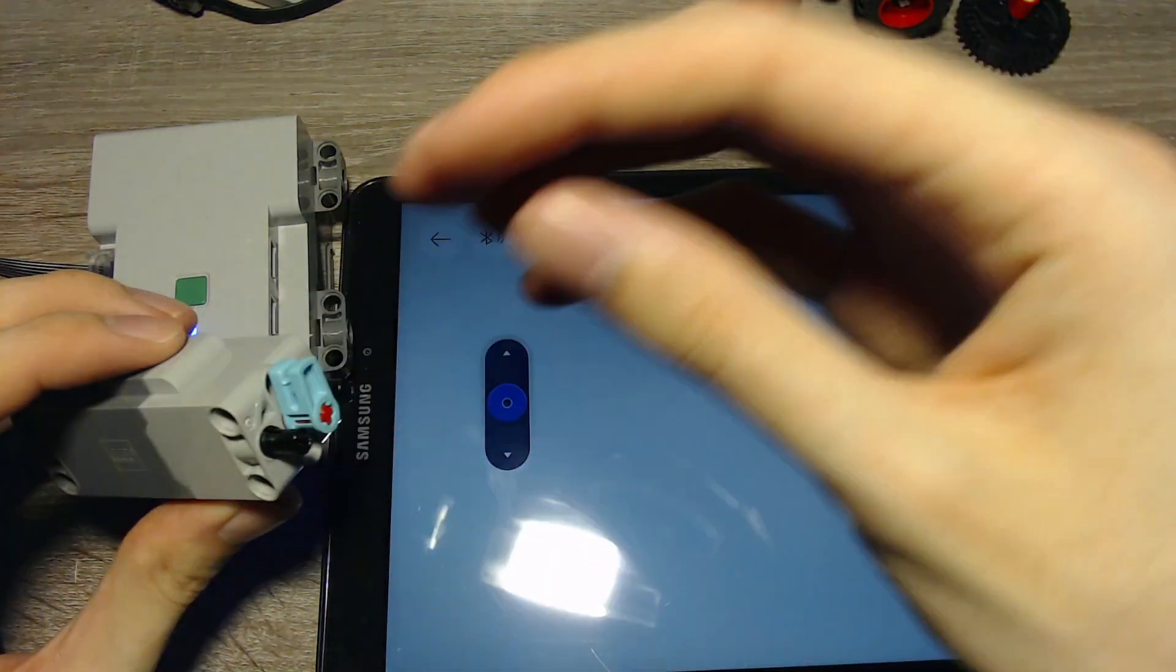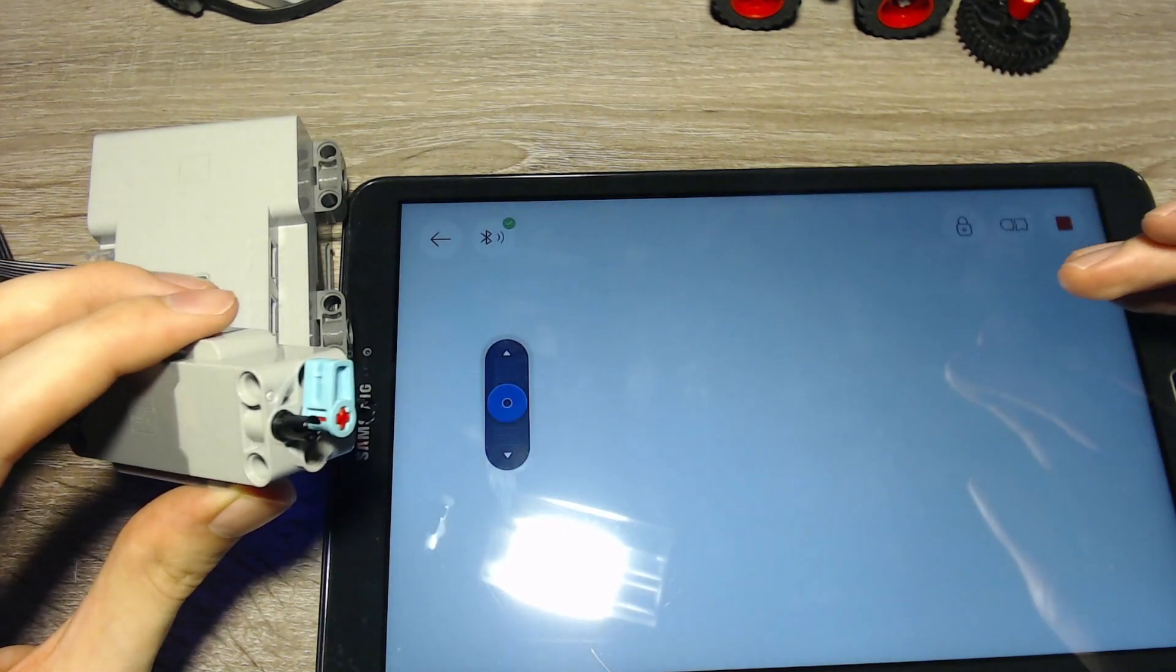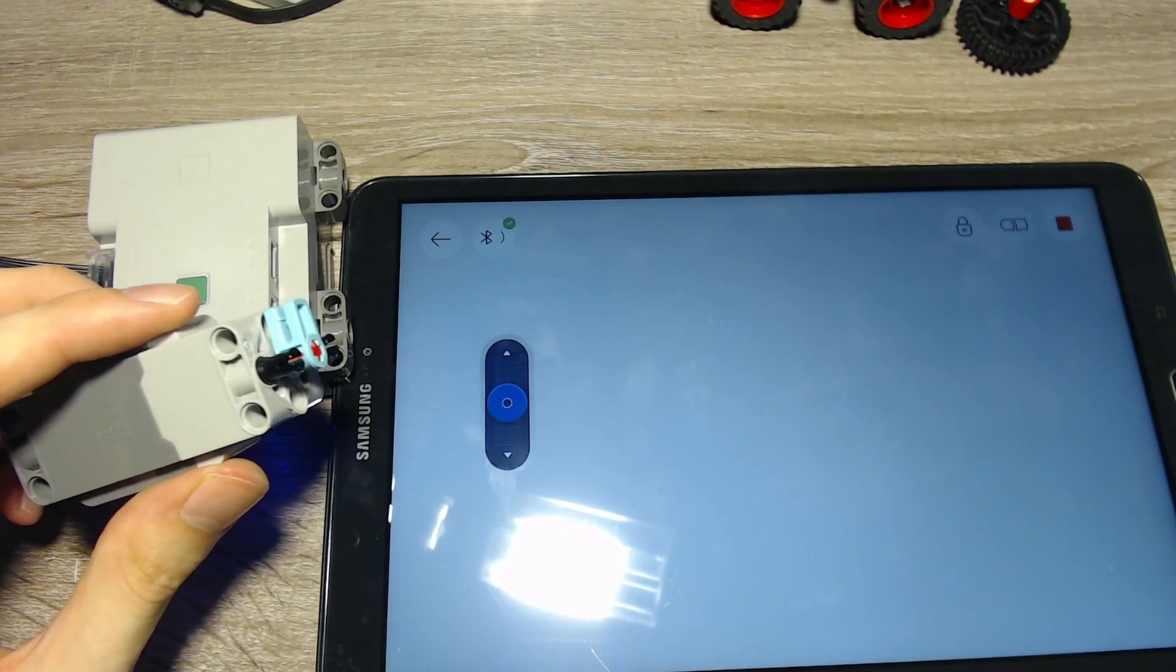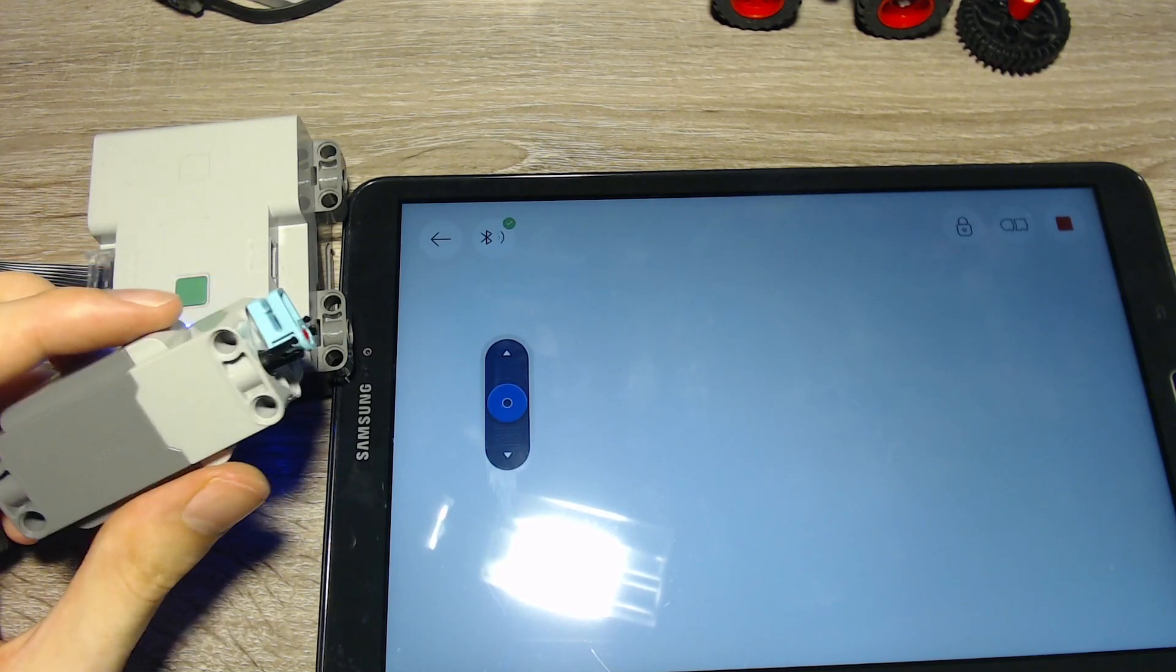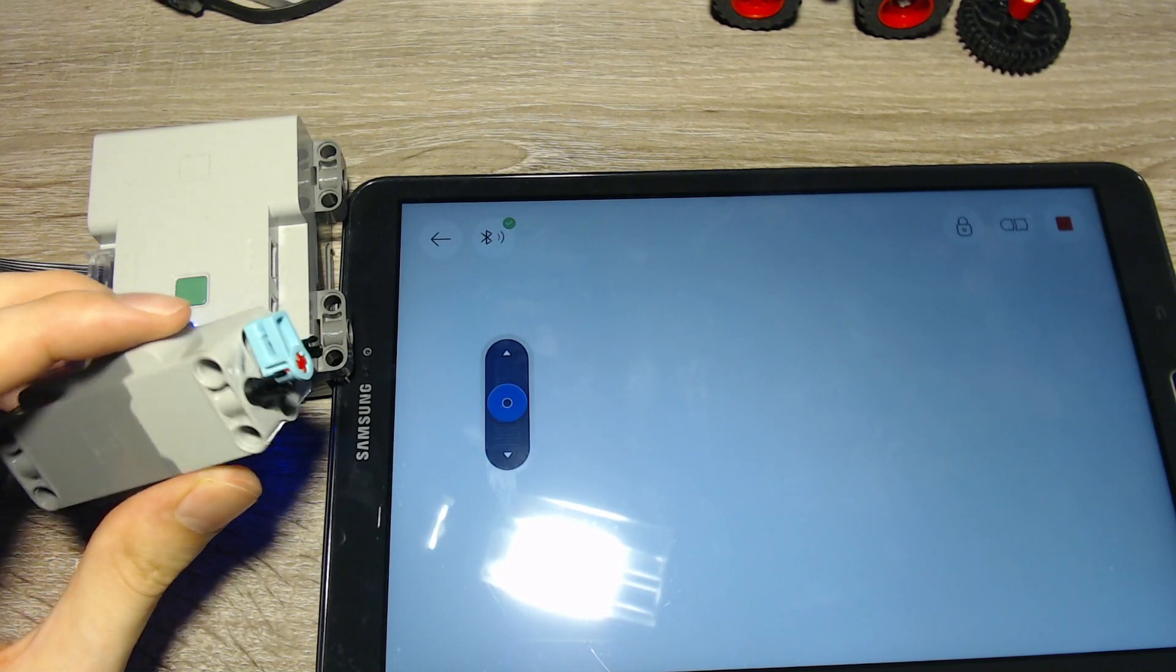And again, they have a position sensor or rotation sensor. They can be used for many other things, not just for servo or for normal driving. They can also be used for a gearbox and other stuff.